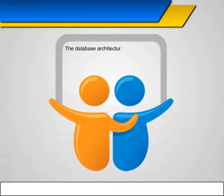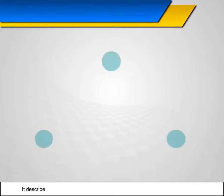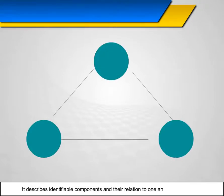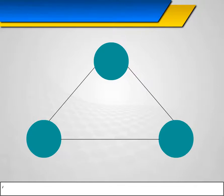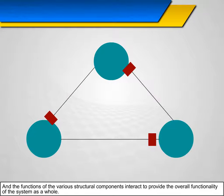The database architecture is a framework in which the structure of the DBMS is described. It describes the identifiable components and their relation to one another structurally, and the functions of the various structural components interact to provide the overall functionality of the system as a whole.